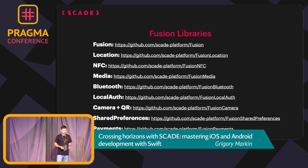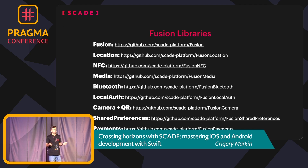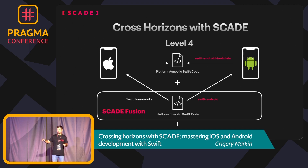We created a set of such libraries covering every functionality we access on Android or iOS: location, NFC, media, Bluetooth, local authentication, payments, and more. We would be happy if the community joined us to work on these libraries. Up through the first three levels, we never touched the UI — we always said the UI will be created in Xcode or Android Studio, and the rest of the functionality can be written and shared in Swift.